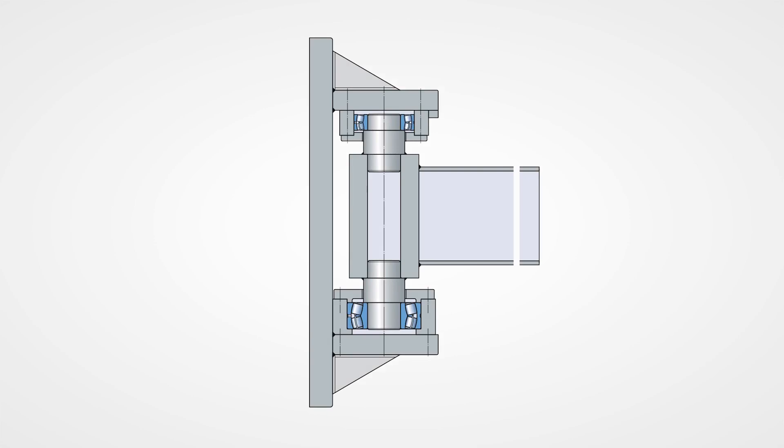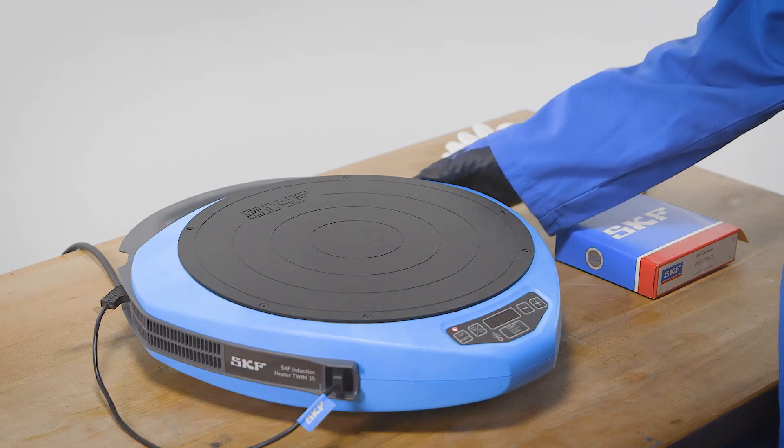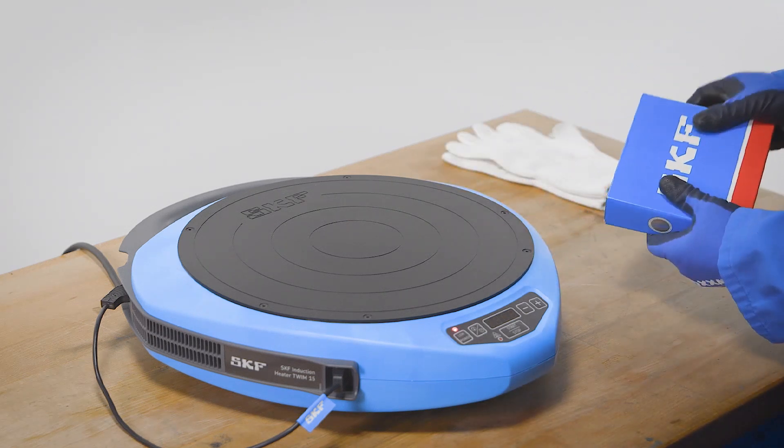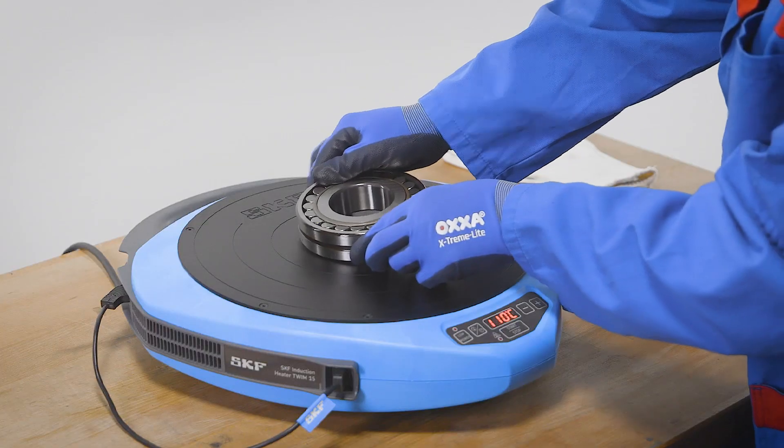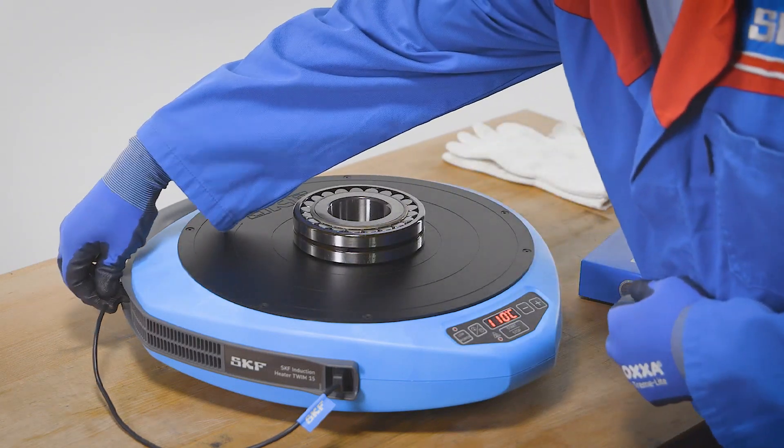For mounting spherical roller bearings with a cylindrical bore, heat is used. Spherical roller bearings generally have tighter interference fits than other bearing types. Therefore heat is the most common mounting technique.